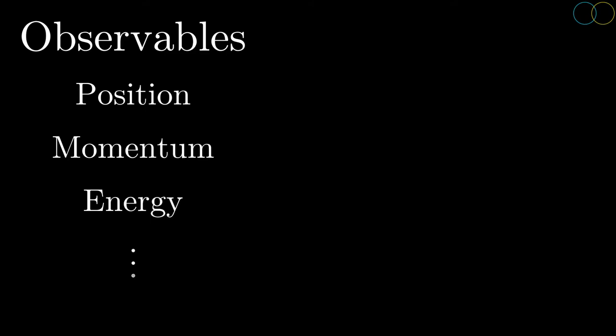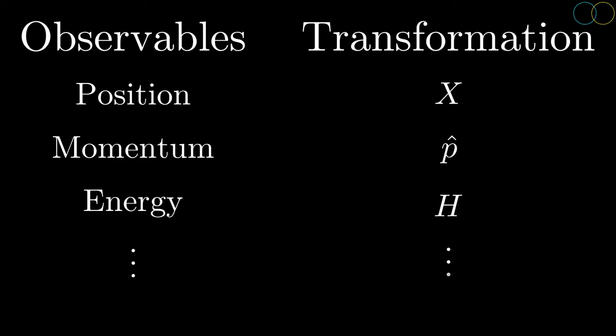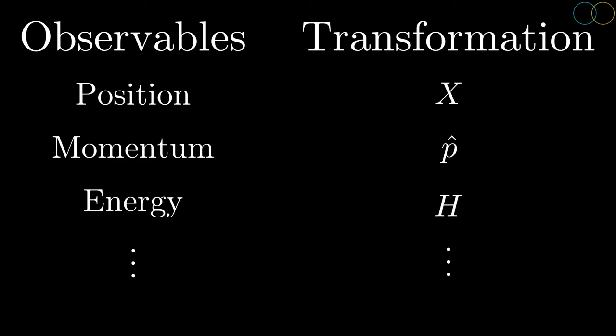So what does this have to do with quantum physics? Well, let me tell you about observables. An observable is some physical quantity that could be measured on the system, such as position or momentum or energy. In quantum physics, much like states are represented by vectors, observables are represented by linear transformations, and the possible values of the observable are the eigenvalues of the transformation.